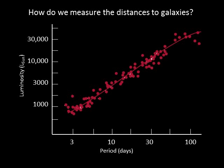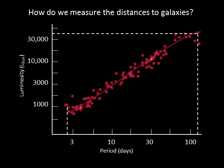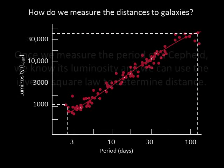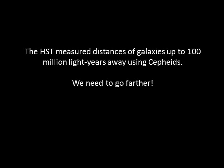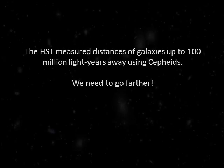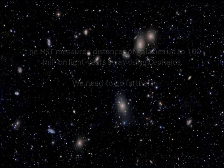If we plot the luminosity versus period of many Cepheids, we see a linear relationship — a Cepheid with a long period has a greater luminosity than a Cepheid with a short period. Once we measure the period of a Cepheid, we know its luminosity, and we can use the inverse square law to determine distance. The Hubble Space Telescope has measured distances of galaxies up to 100 million light-years away using Cepheid variable stars.